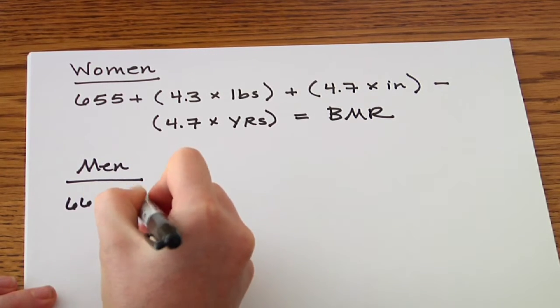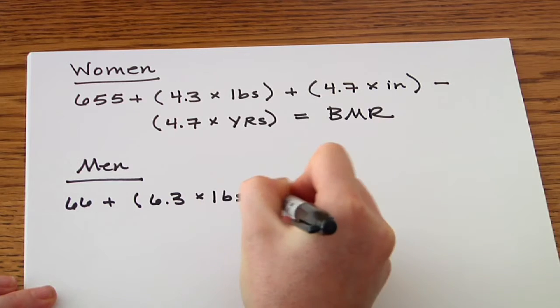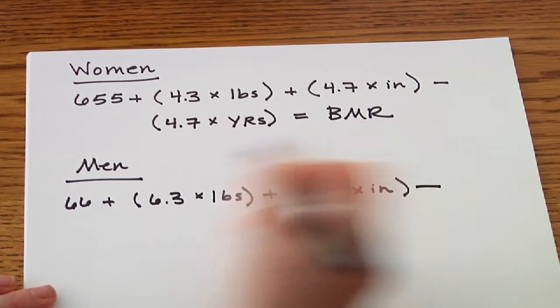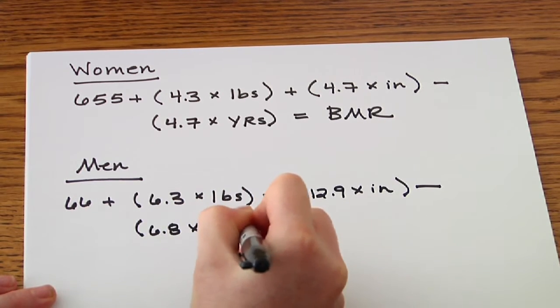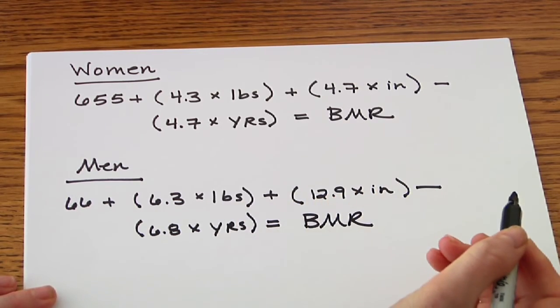For men the equation is 66 plus your weight in pounds times 6.3 plus your height in inches times 12.9 minus your age in years times 6.8 and that equals your BMR.